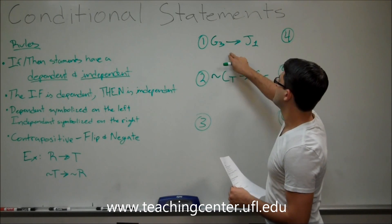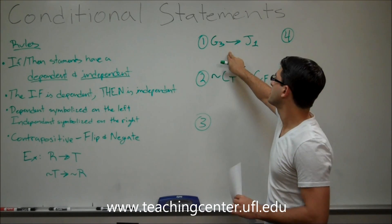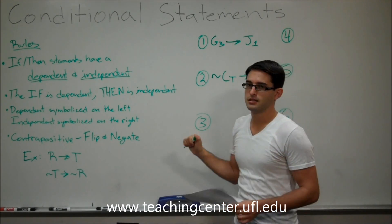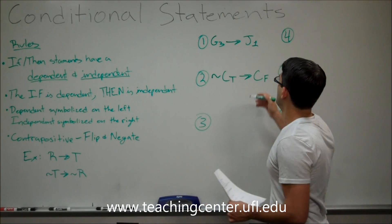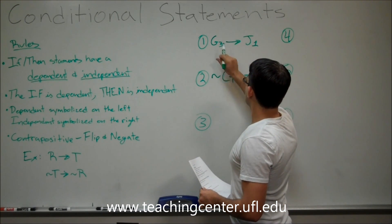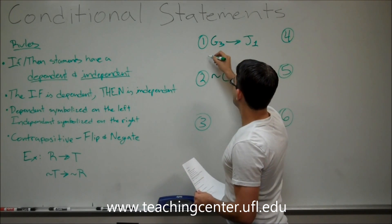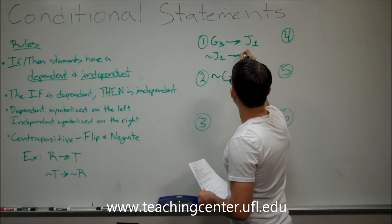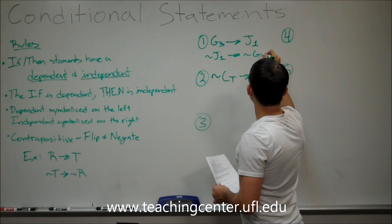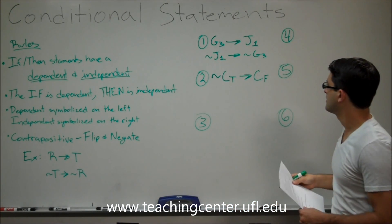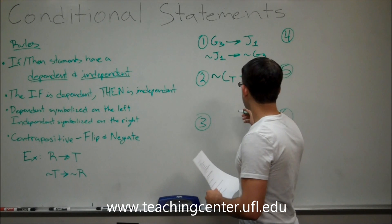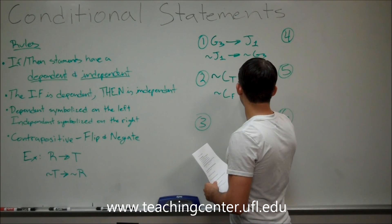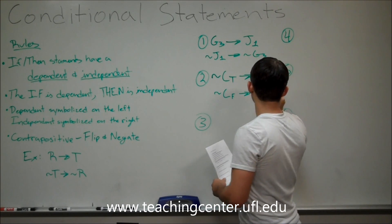We skipped the contrapositive for number one, so let's go back. Remember, for the contrapositive all you have to do is flip and negate. So you flip J1 and G3 and negate them: if Jasmine does not go first, then Gerald does not go third. For number two, the contrapositive is: if Carl does not go on Friday, then Carl goes on Tuesday.